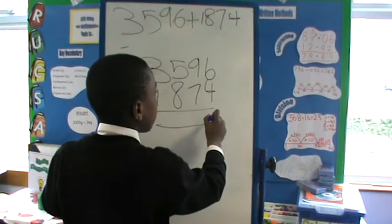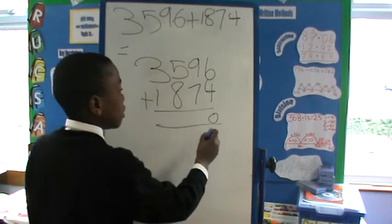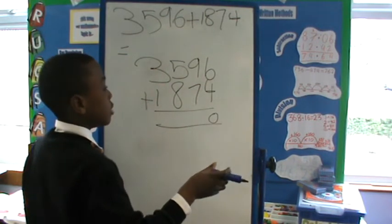So 6 and 4 makes 10. And when you get 10 you have to put a 0 here because at the end of the 10 there's a 0.